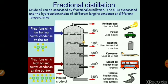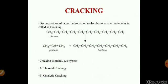The petrol obtained from fractional distillation meets only about 40% of the total demand for petrol, so we need further methods to obtain petrol. These methods include cracking of heavy oil and obtaining synthetic petrol. Cracking is the decomposition of higher molecular weight hydrocarbons into smaller molecules. Generally, heavy oil is cracked to obtain gasoline.